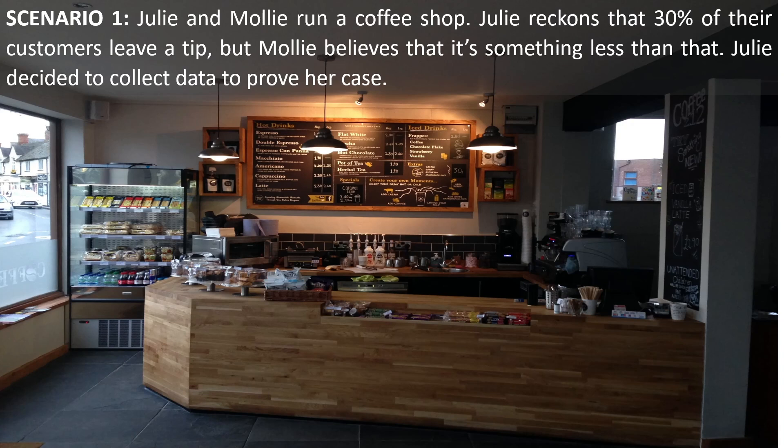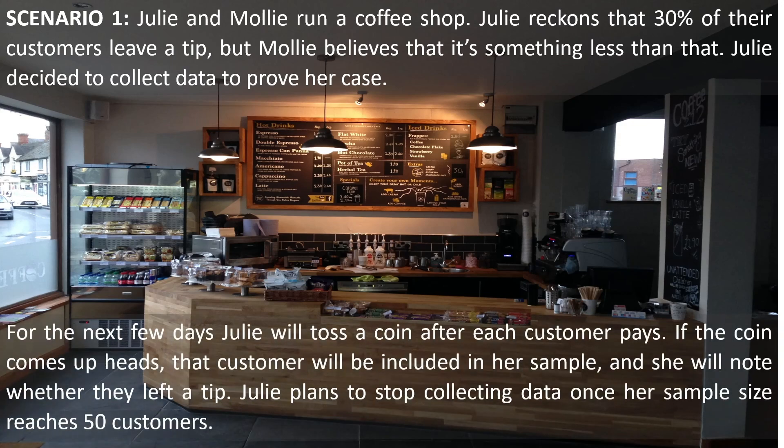So Julie and Molly run a coffee shop. Julie reckons that 30% of their customers leave a tip, but Molly believes it's something less than that. Julie decided to collect data to prove her case. For the next few days, Julie will toss a coin after each customer pays. If the coin comes up heads, that customer will be included in her sample, and she will note whether or not that customer left a tip. Once her sample size reaches 50, she will stop.